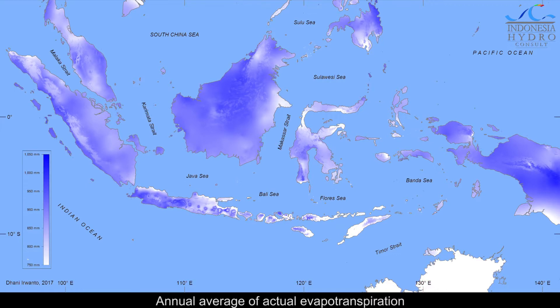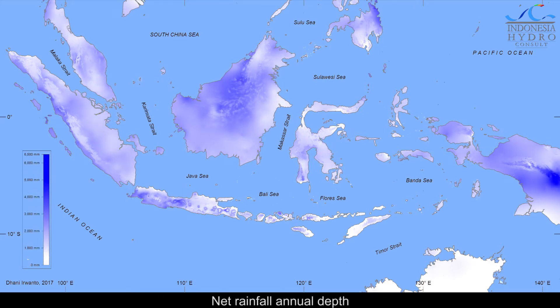The water from rain falling on the ground evaporates to the atmosphere due to sunlight and wind. In addition, vegetation consumes water for its transpiration, which finally evaporates to the atmosphere as well. This combined process is called evapotranspiration. Evapotranspiration reduces the rainfall that is available for the flow rate of water in the streams. This available rainfall then becomes the net rainfall, as shown on this map.